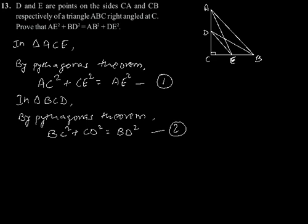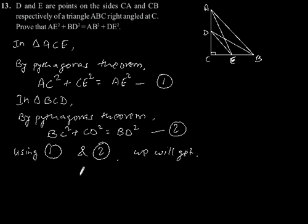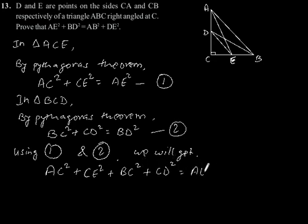Now using equation 1 and equation 2, we will get AC square plus CE square plus BC square plus CD square is equal to AE square plus BD square. Let us say this is equation 3.